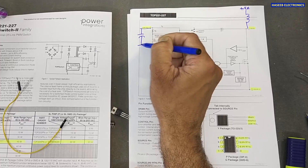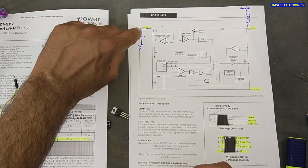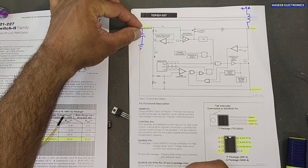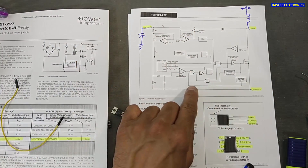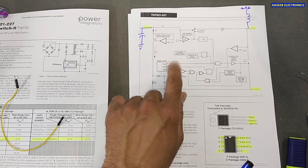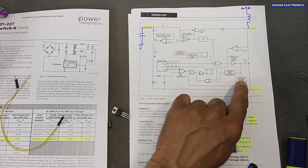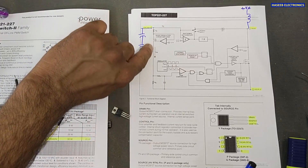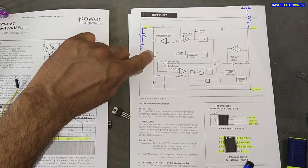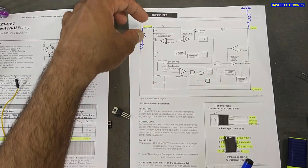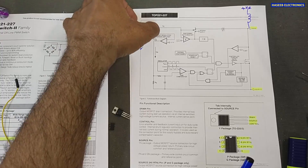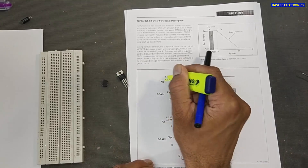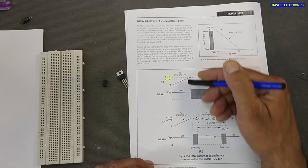When this capacitor charges to 4.7 to 5.6 volts — above 5 volts — this IC will start switching. It will start to provide pulses and it will monitor the current flowing and how much voltage is coming from here. It is also called feedback current. It will monitor the voltage level provided from the optocoupler, so it will control the output voltage. The working window is from 4.7 to 5.7 volts.